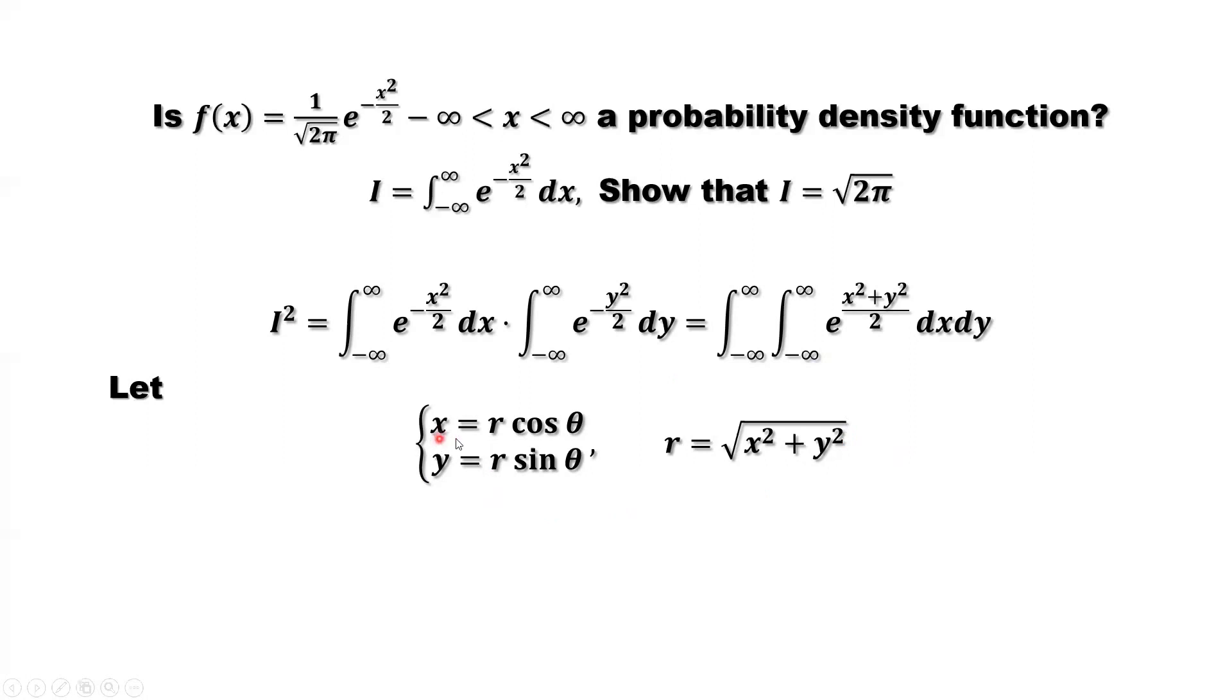x equals r times sine theta. y equals r times sine theta. This x equals r times cosine theta. r equals square root of x squared plus y squared. That's the hypotenuse.